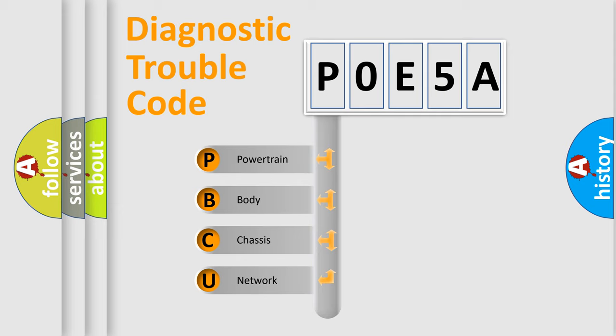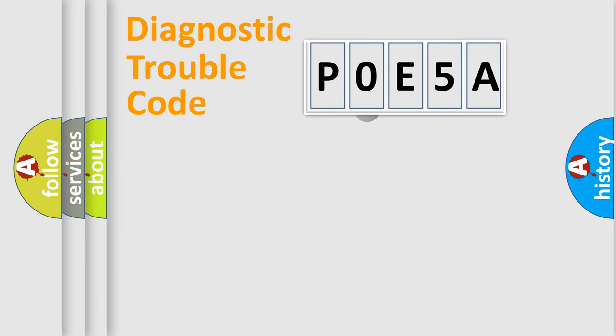We divide the electric system of automobile into four basic units: Powertrain, body, chassis, and network. This distribution is defined in the first character code.